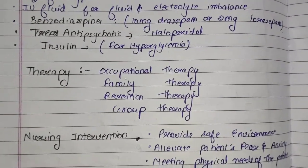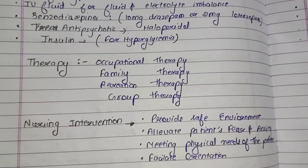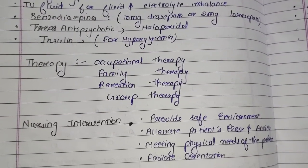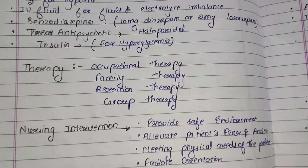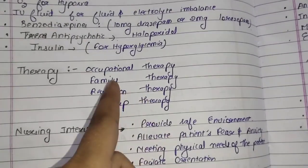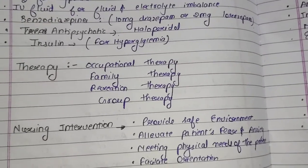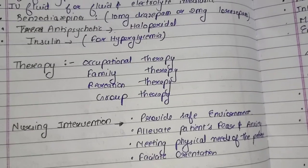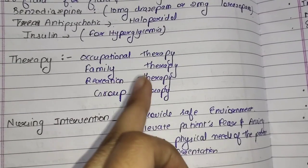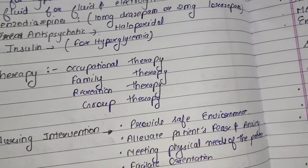Some therapies can also be given to treat delirium patients. The first is occupational therapy, which is provided to help the person engage in a good occupation and get better job opportunities. Next is family therapy, which is provided to the entire family of the patient to help treat delirium effectively. Recreation therapy and group therapy can also be provided to the group to easily treat delirium.